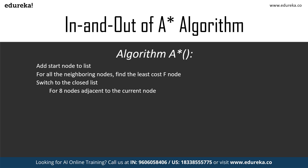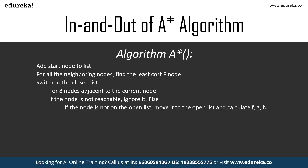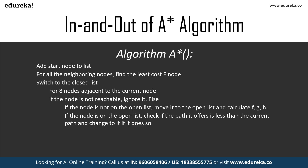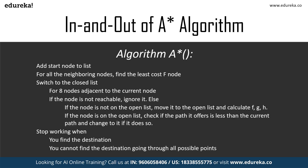For all nodes adjacent to the current node, check if each node is reachable. If it is not reachable, ignore it. If a node is reachable, check if it is on the open list — if not, move it to the open list and calculate F, G, and H. If a node is already on the open list, check if that path is lesser than the path we are currently on; if so, change over to that path. You stop when you find the destination, or when you cannot find the destination after going through all possible points in the graph.